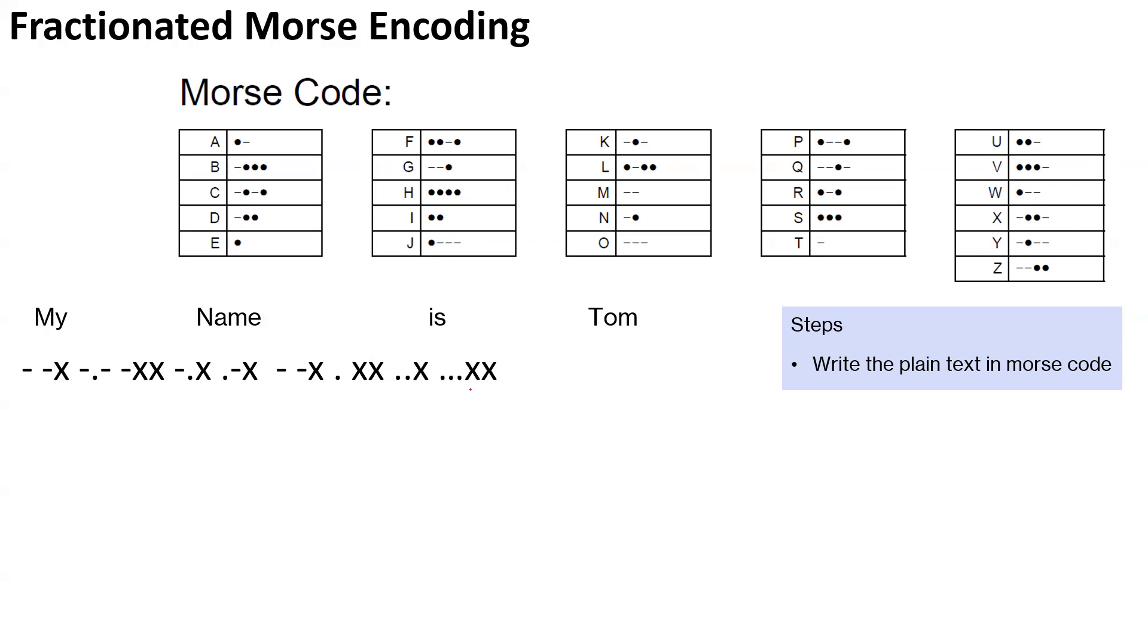Similarly, we'll go ahead. I, S, and the end of the word. And we'll go ahead with Tom. So T is dash. O is triple dash. And M is again two dashes. So this is the Morse encoding for the sentence, for the plain text we had.